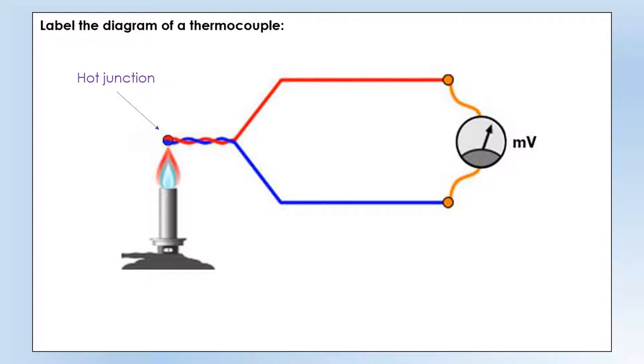So we have where they meet each other called the hot junction. Those two wires are actually connected at that point. We have the opposite end which is called the cold junction which is where they're connected to the voltmeter and this needs to be at a known temperature. So quite often we just use room temperature so we know that both ends are at room temperature, but we can put them into something like ice which will give a more controlled cold junction if we want to.